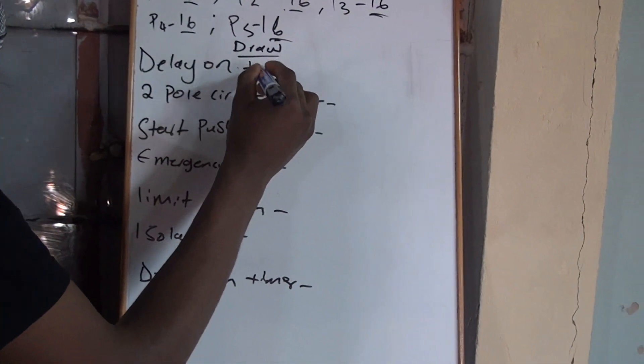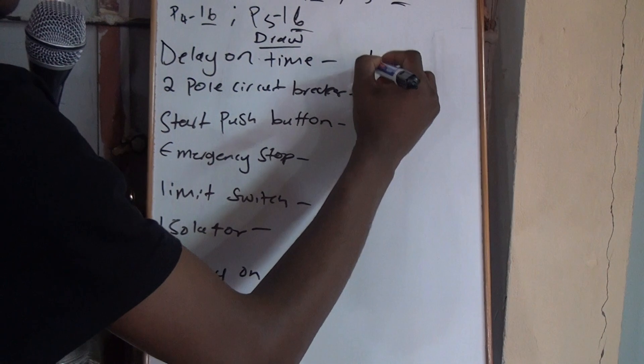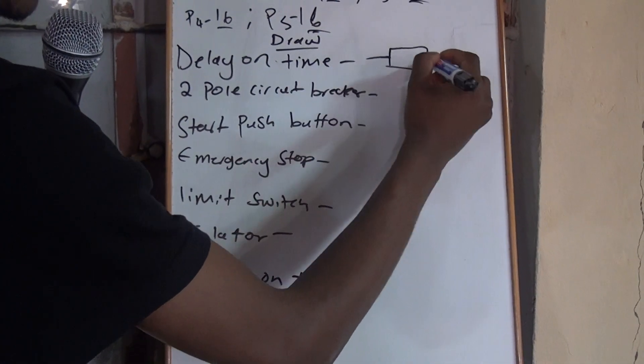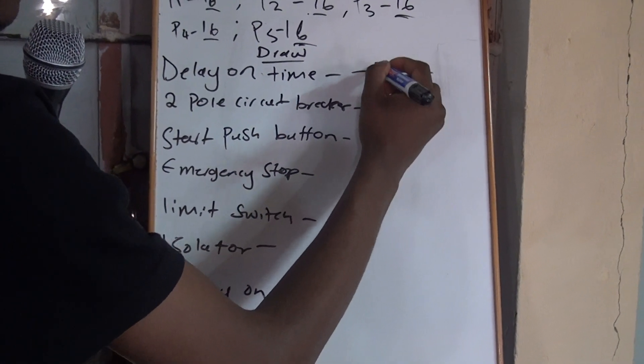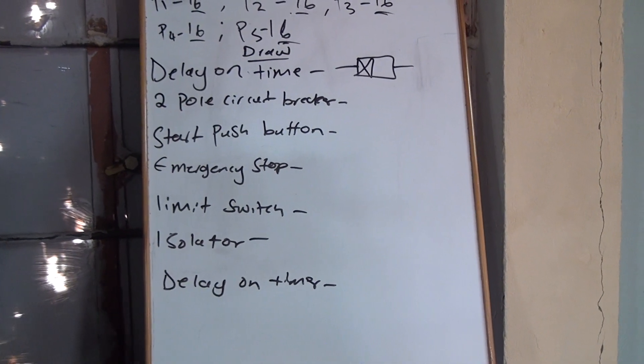And there is a delay on timer here. And then your delay on timer, this is how you draw it. That's your delay on timer and your 2-pole circuit breaker.